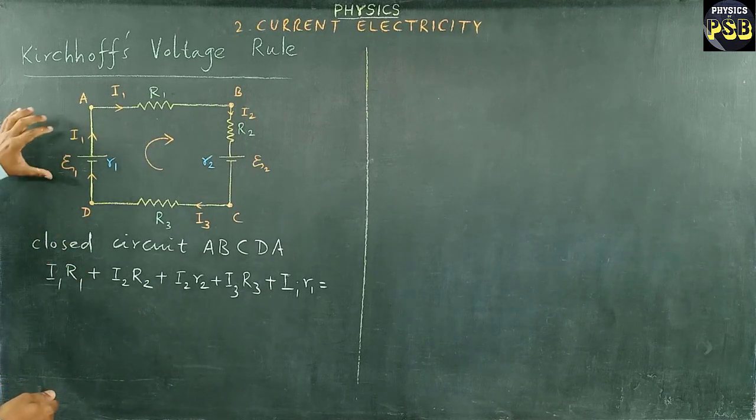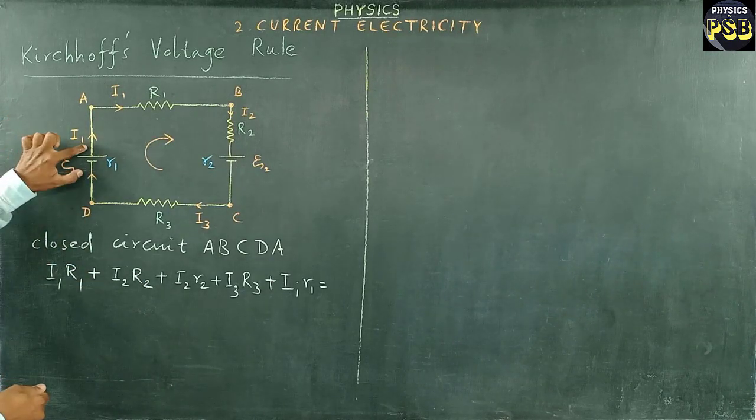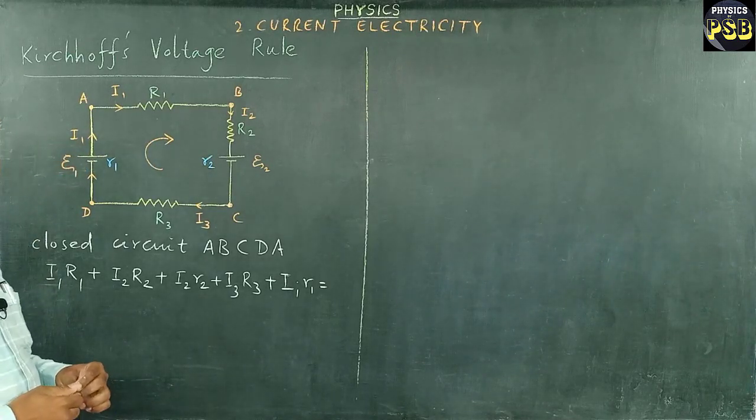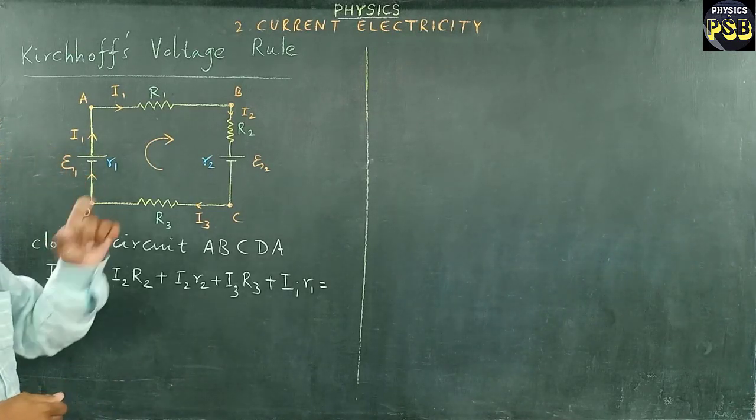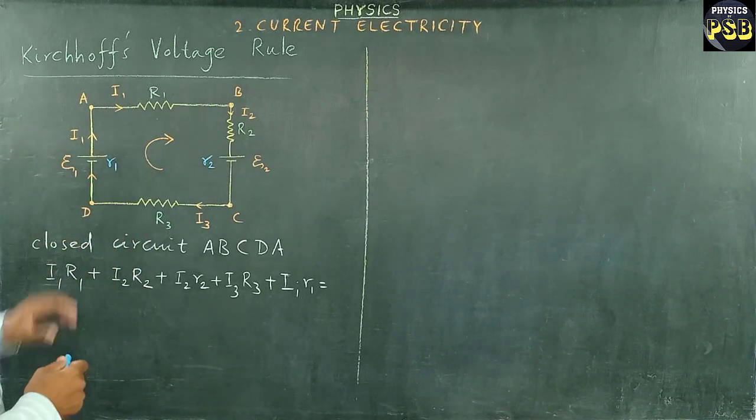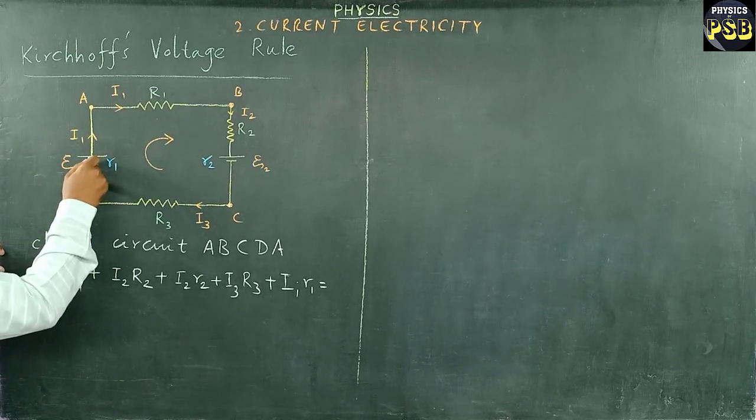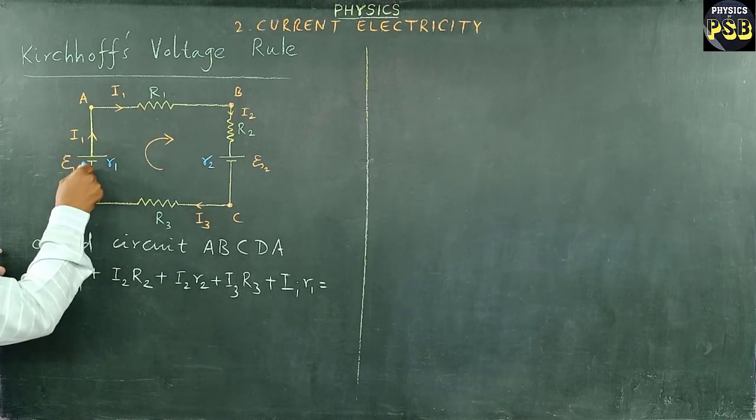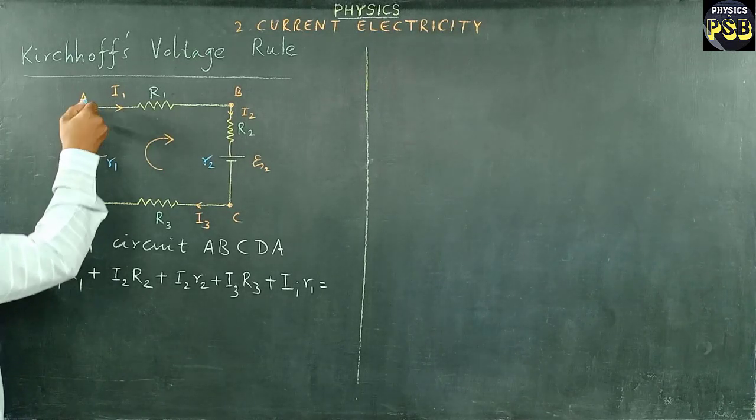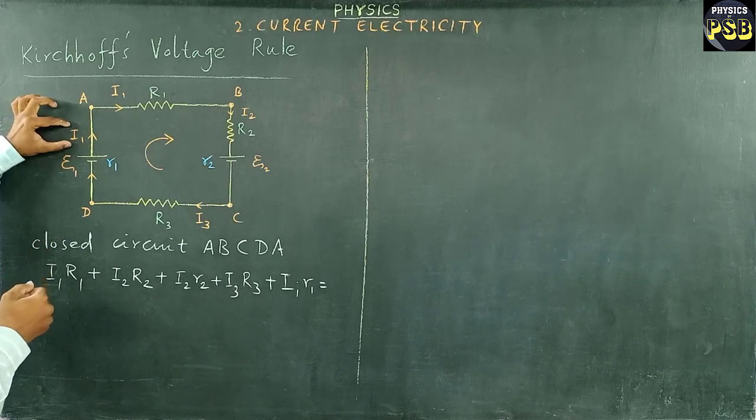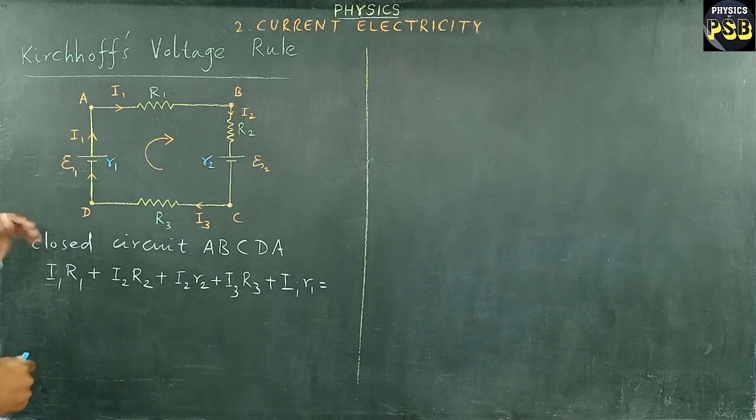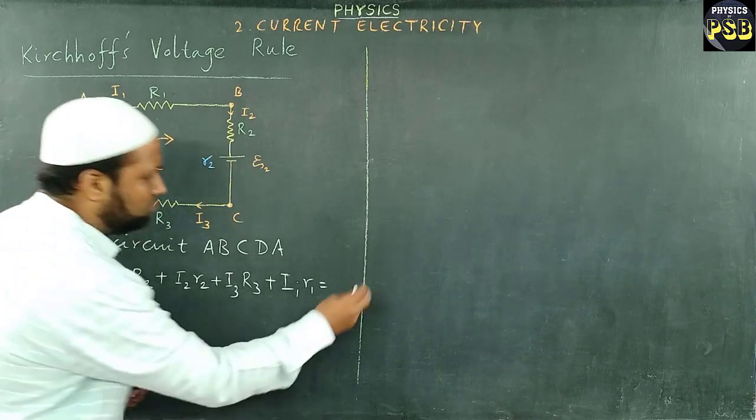Now, I told you earlier, if the assumed direction of current is similar to the actual direction of current, we use positive term, positive sign. So here, we know current in cells flows from positive terminal. We use this upward direction, and assumed direction of current is also in the same way, so we use plus sign.